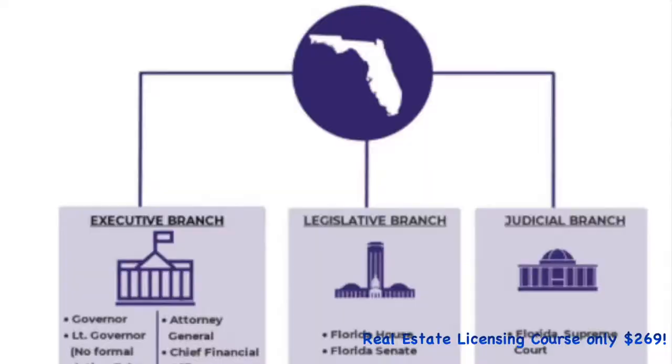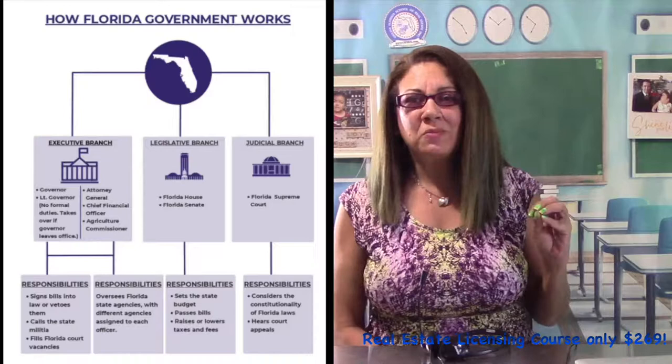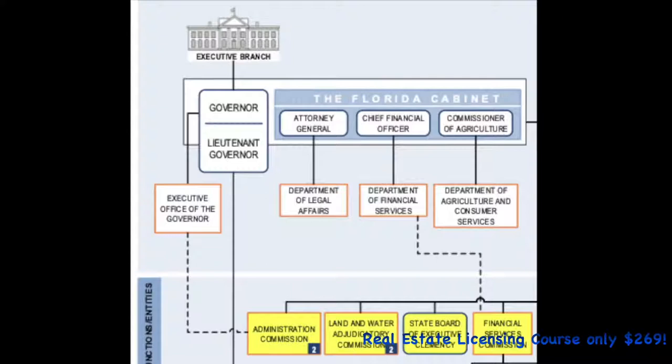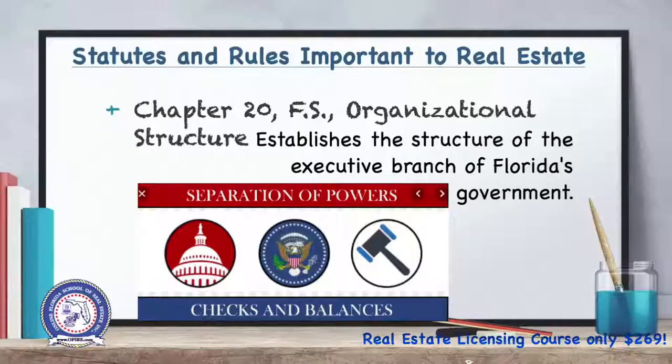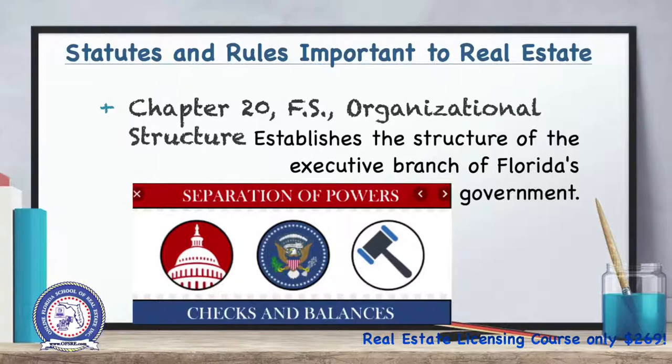The Florida Constitution provides for the legislative, executive, and judicial branches of government — just like at the federal level. The executive branch executes the programs and policies adopted by the legislature. Policies are implemented by departments of the executive branch, including the Department of Business and Professional Regulation. Florida Statute 20, titled 'Organizational Structure,' establishes the structure of the executive branch of government.